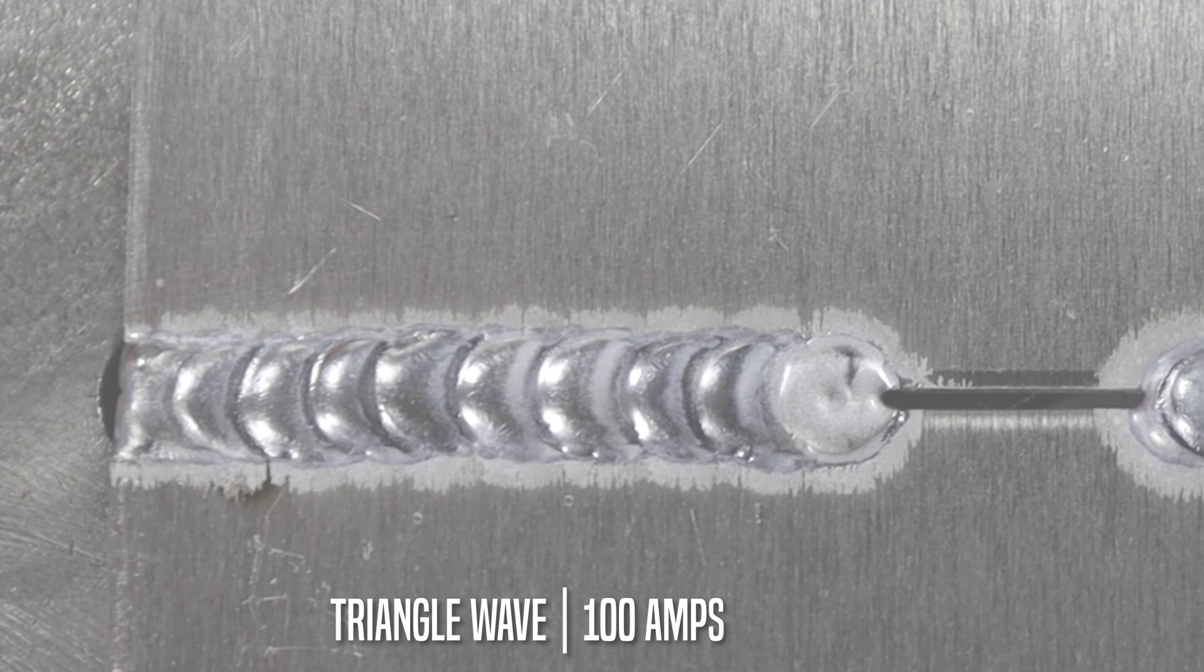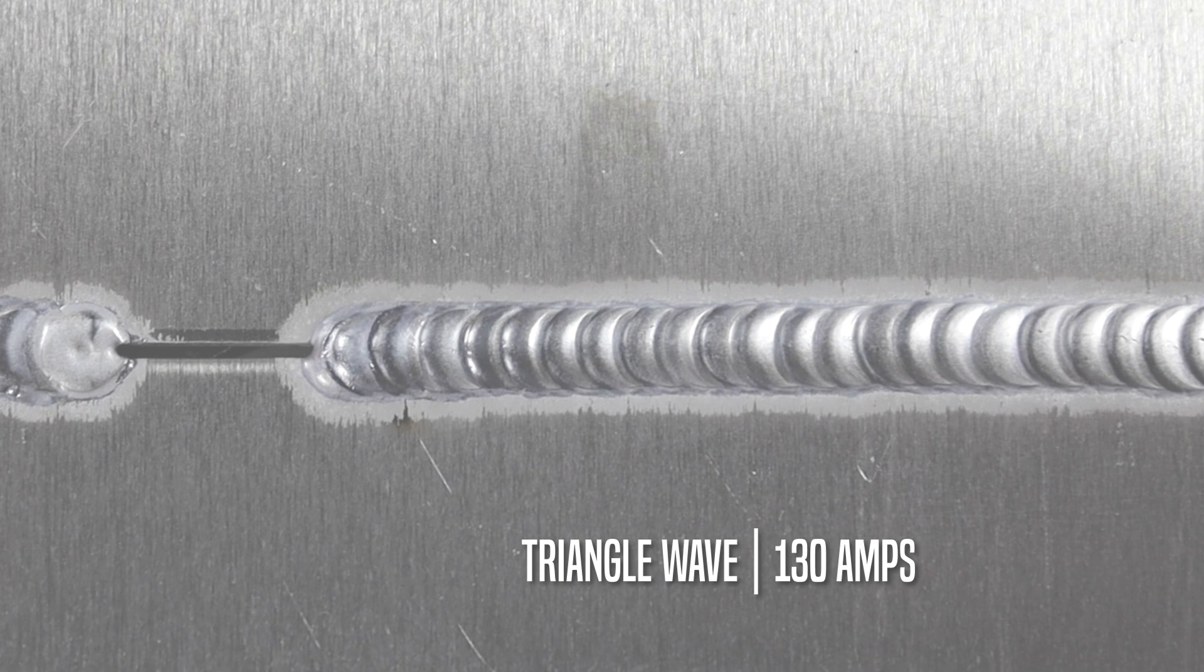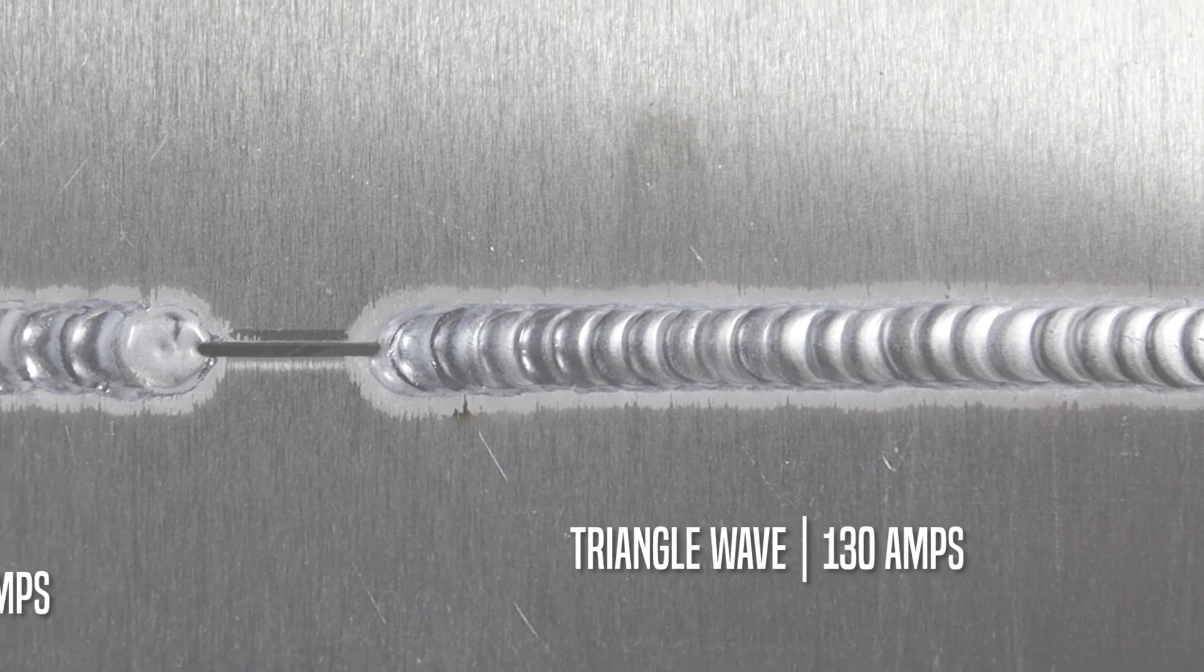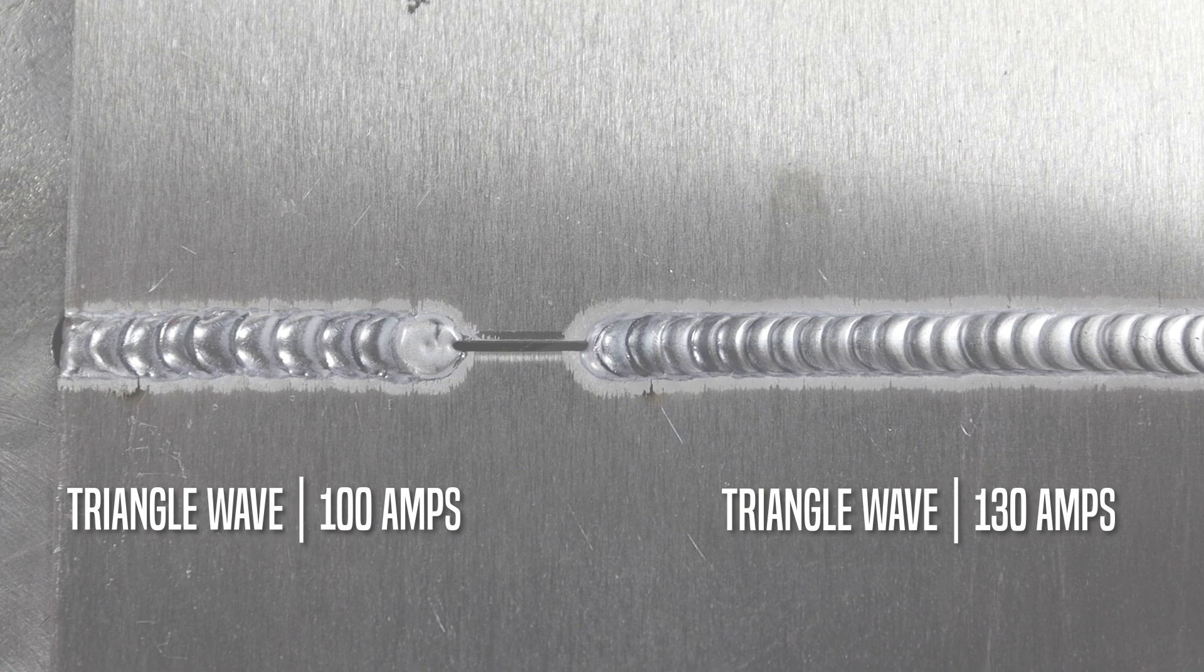So we went ahead and we jumped up our amperage. We went up 30 amps to 130. See the toes here are tied in nice and smooth. The weld's a little flatter. We had a little bit higher travel speed. This is definitely where we need to be and that's why we have triangle wave. It's definitely a reduced heat input.